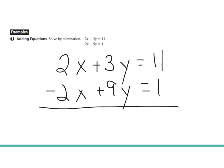If we add them, add your columns just like you would, x's with x's, y's with y's. We end up getting 0x here plus 12y equals 12.